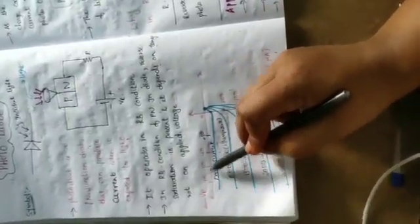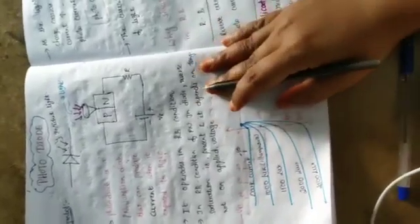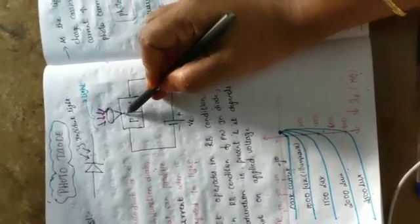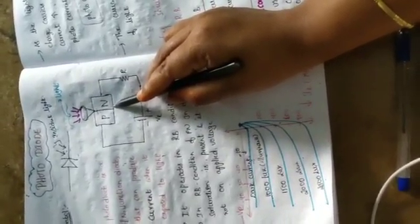This is the V-A characteristics for photodiodes. The x-axis is the reverse voltage Vr and the y-axis is the reverse current, which is in the order of microamperes. When light is absent, the current in the reverse-biased photodiode is called the dark current. Even in the absence of light, there are some minority charge carriers across the PN junction, and the current due to them is called dark current.